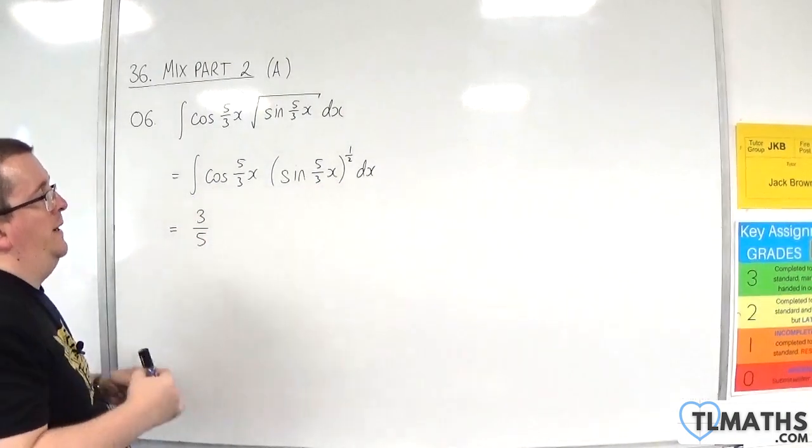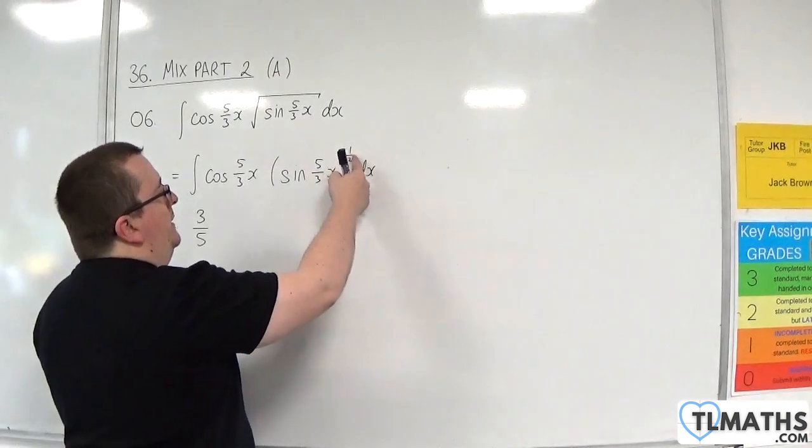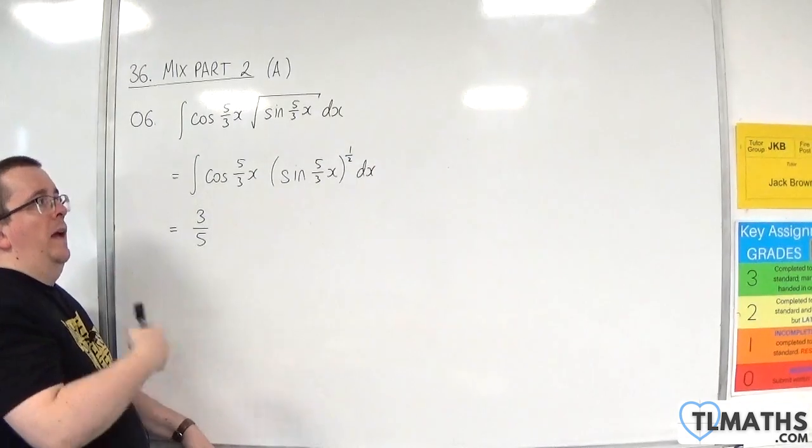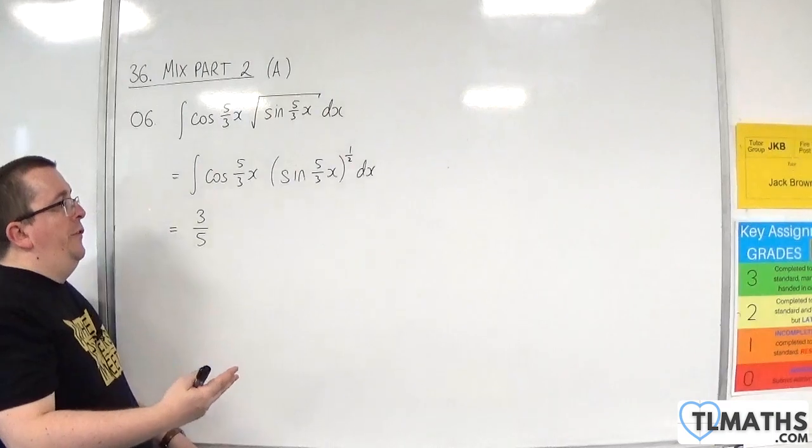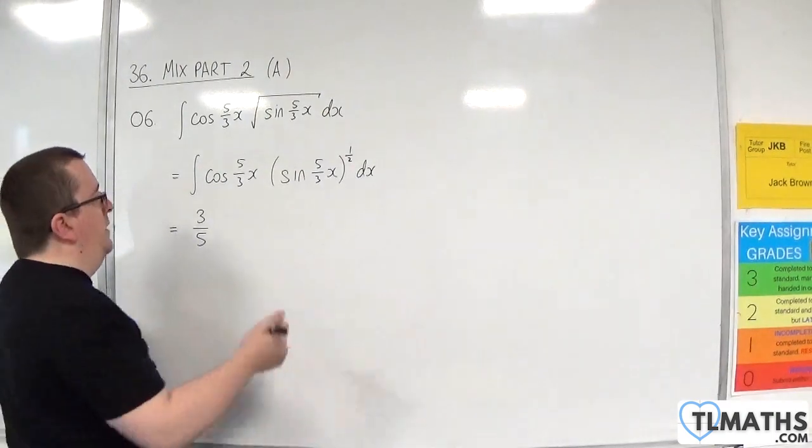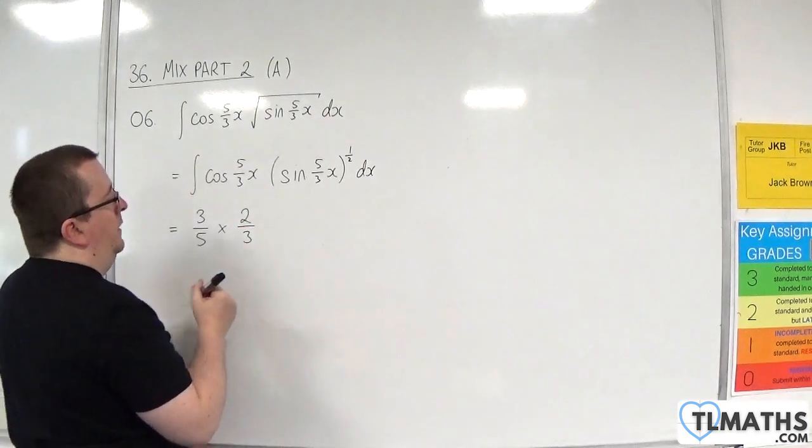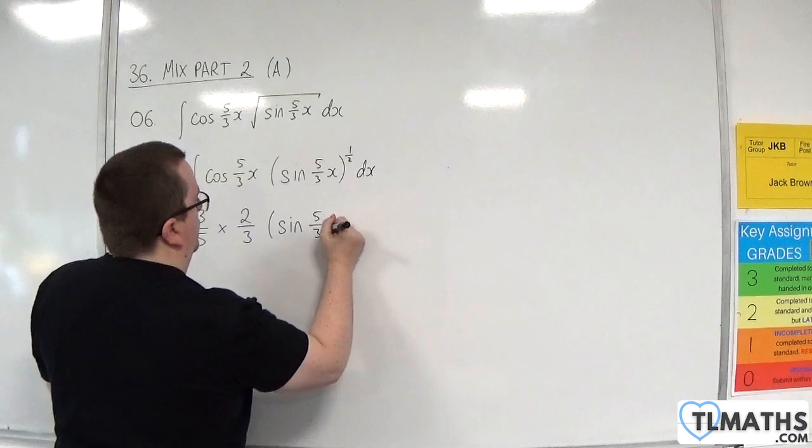But at some point also, we're going to add 1 to the power here and divide by the new power. So at some point, I've got to divide by 3 halves, which is the same as multiplying by 2 thirds.